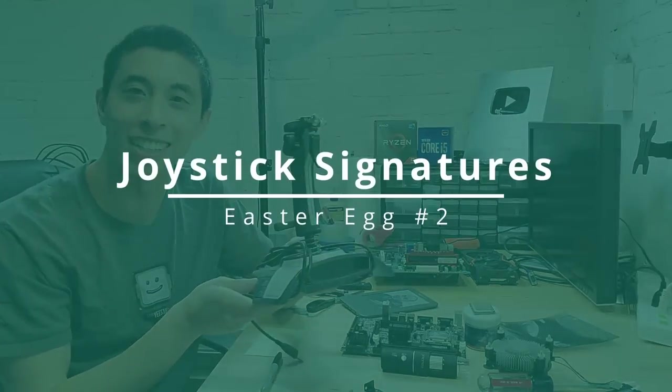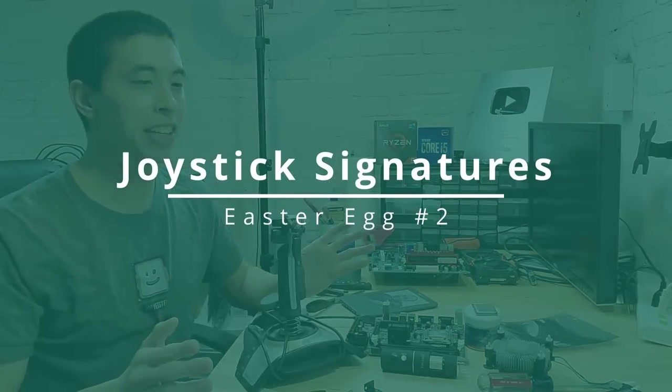Up next is an Easter Egg hidden inside of a joystick. Specifically inside of the Microsoft Sidewinder Precision Pro, which was a USB joystick released way back in 1995.